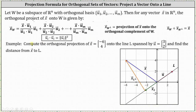We're asked to compute the orthogonal projection of vector x onto the line spanned by vector u, where vector u is the vector (3, 2), and we're also asked to find the distance from vector x to line l. Looking at the graph, vector u is the red vector, and the line spanned by vector u is the black line l. The given vector x is the vector (-6, 4), shown as the blue vector.